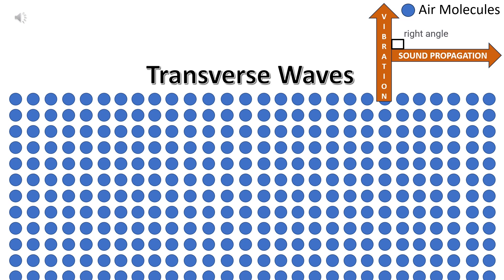Transverse waves are a type of wave motion in which the particles of the medium move perpendicular, or at right angles, to the direction in which the wave itself is traveling. These waves have a characteristic up and down or side to side motion, as you can see on this slide.